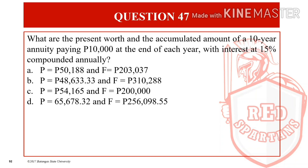What are the present worth and accumulated amount of a 10-year annuity paying P10,000 at the end of each year? The key note for ordinary annuity is that payment is at the end. So when payment is at the end, we use ordinary annuity formulas, with interest at 15% compounded annually. Let us find the present worth and the accumulated amount.